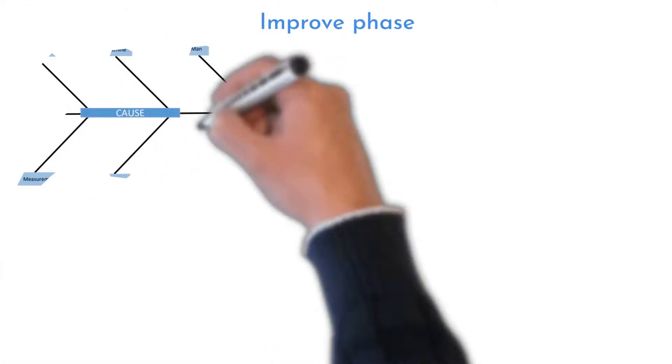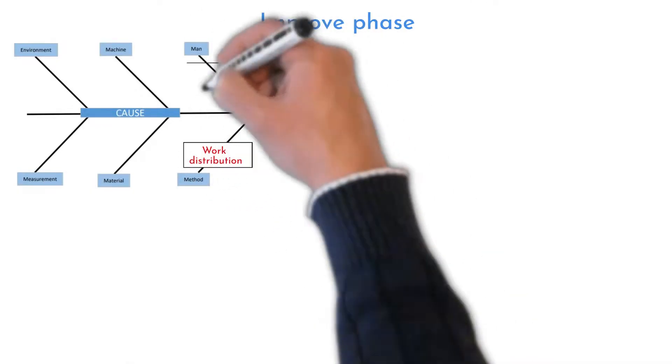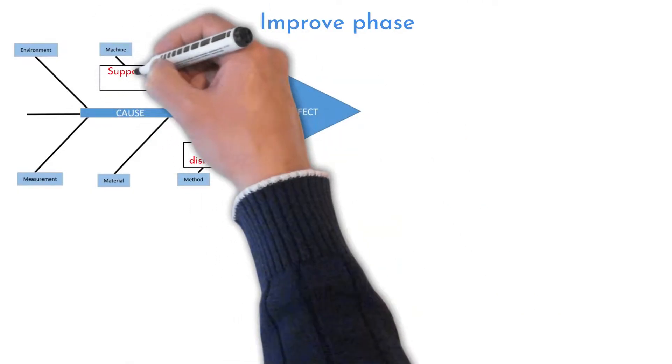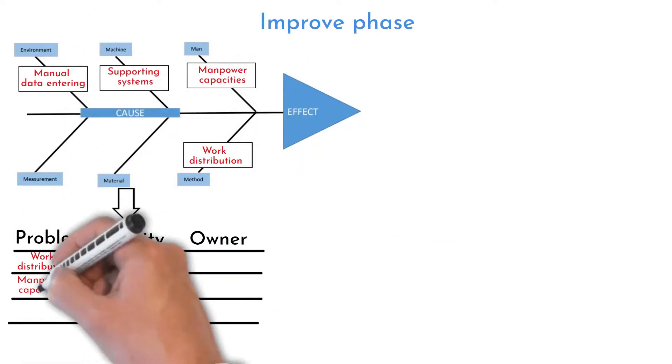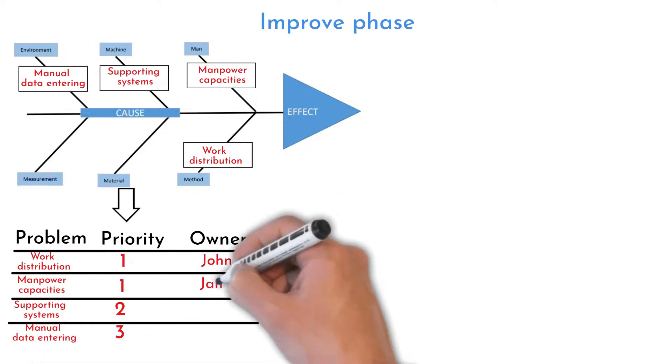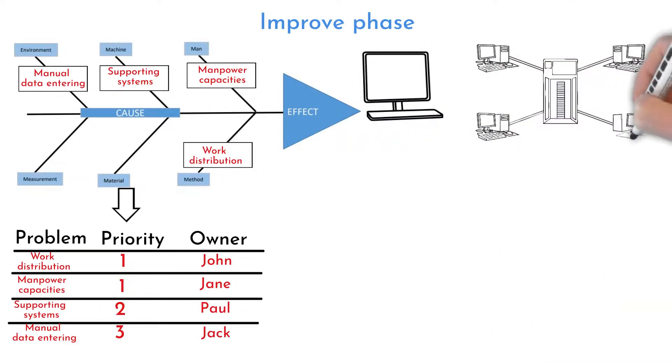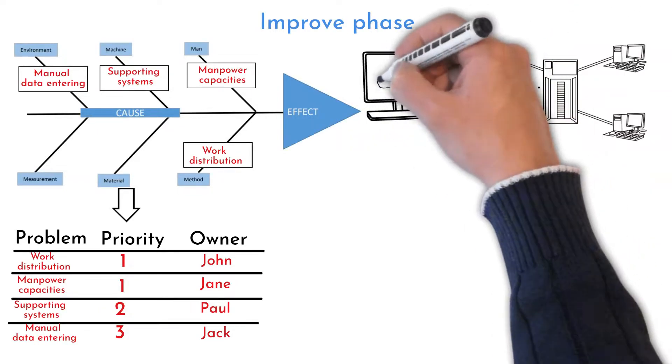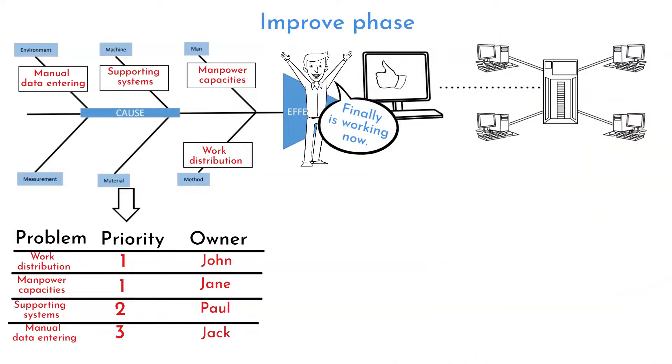Fishbone diagram was used to reveal challenges on admission process. Work distribution, capacities, supporting systems, data manual entering are just few opportunities needed to be addressed. Task and priorities to be resolved were identified. User-friendly computer system was installed to whole hospital organization prior the project. Individual departments are sharing information through this system. Admission department and their requirements were incorporated to the system now.